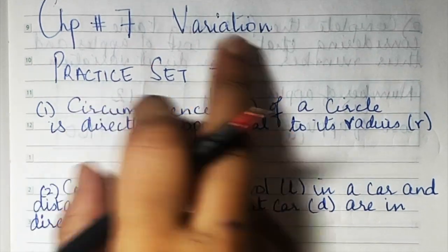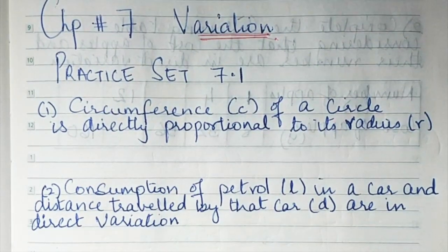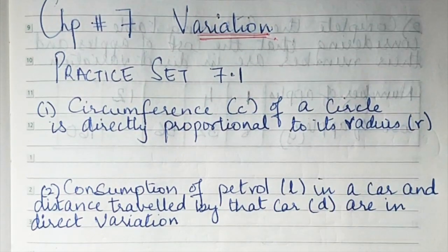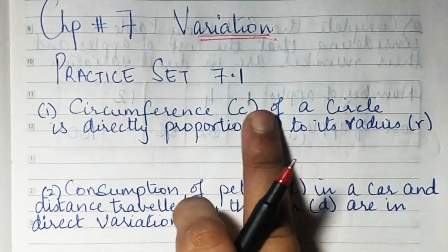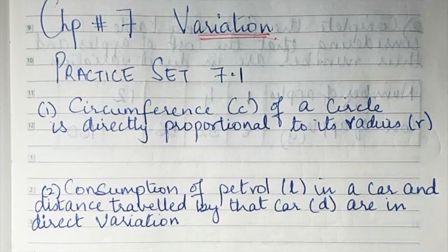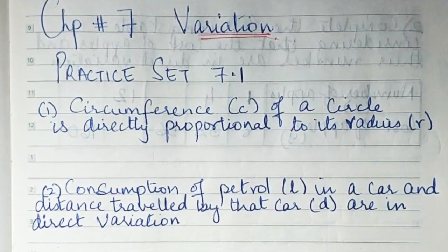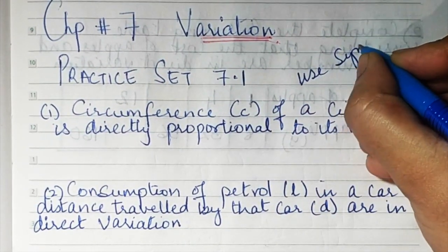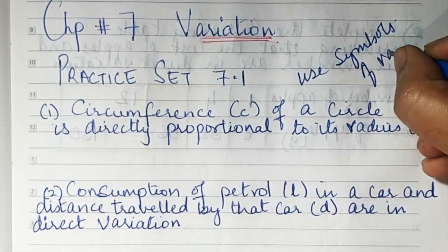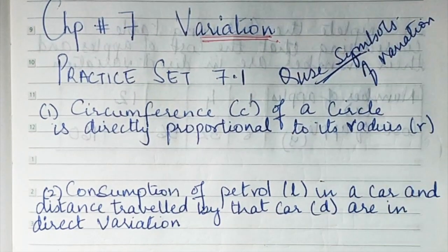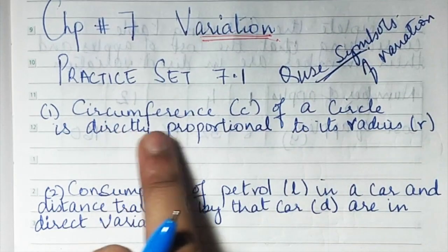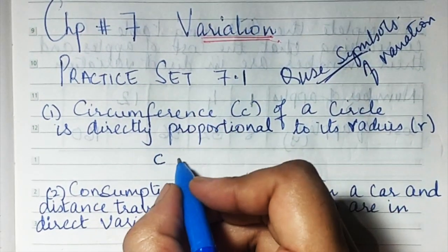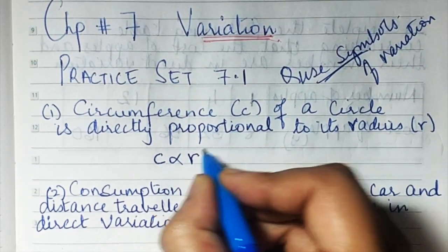Today we begin with Chapter 7: Variations. You have already learned about direct variation and inverse variation in your previous class. We begin with Practice Set 7.1. The first question says: the circumference C of a circle is directly proportional to its radius r. Write this using symbols. So we write C is directly proportional to r.